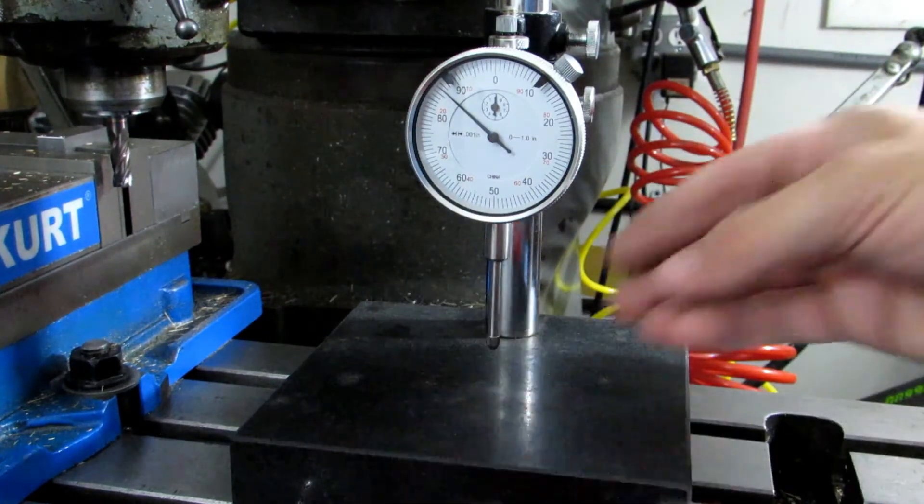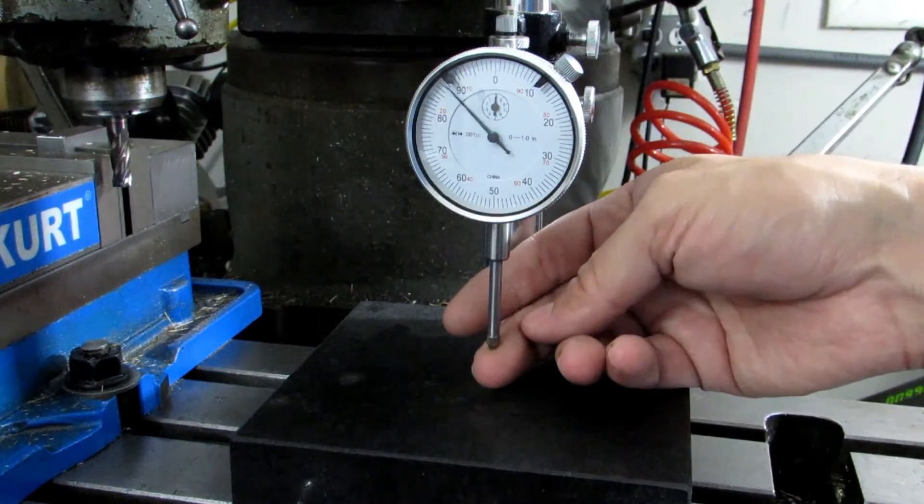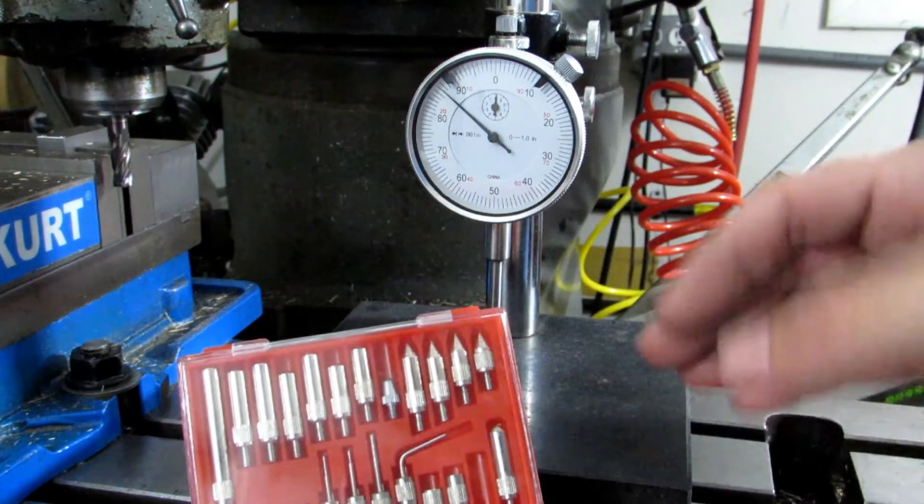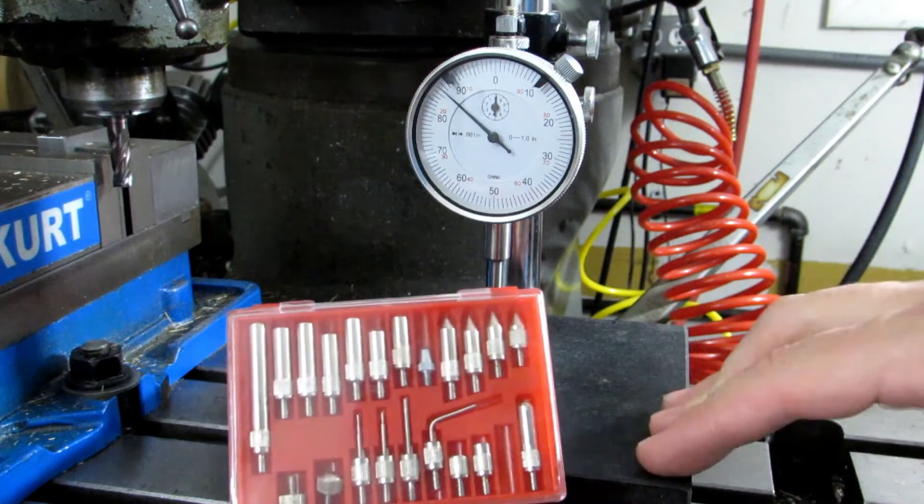For round things, that minimizes the point of contact down here on whatever it is you're indicating. Likewise with the pointed tips, and you could also use those for grooves and keyways.